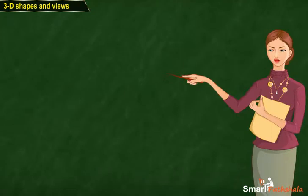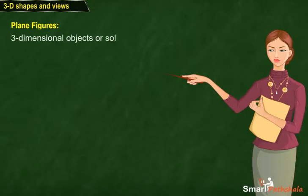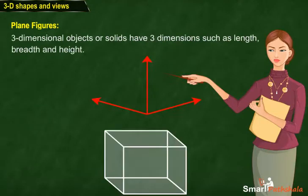Students, let's learn about 3D objects. Three-dimensional objects or solids generally have length, breadth and height.